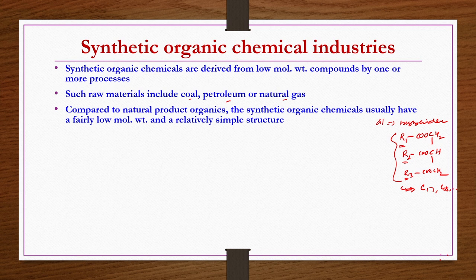By contrast, whatever synthetic organic chemicals we derive from raw materials like petroleum and natural gas will have simple structures — like methane, ethylene, formaldehyde, methanol, chloromethanes — these kinds of simple structures.